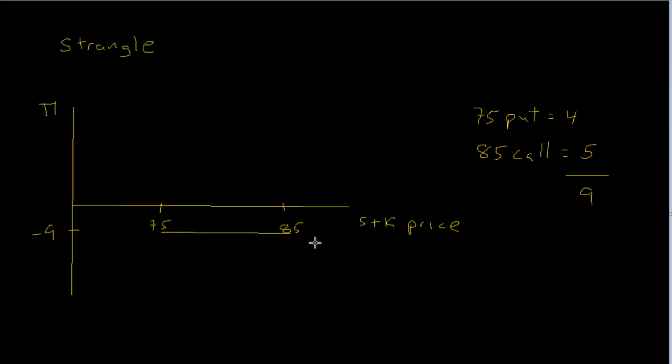Now, for every dollar that goes above 85, you're going to make a dollar. You're not going to lose anything on the put. You just throw that away, and that cost is already incorporated. So in this case, you're going to see this go upward, and it should have a slope of one. And in the case of the price falling below 75, for every dollar that falls below 75, you'll make a dollar from the put. But the call isn't worth anything, you'll just throw it away. So again, you'll get something that looks like this. And again, you get two break-even points.